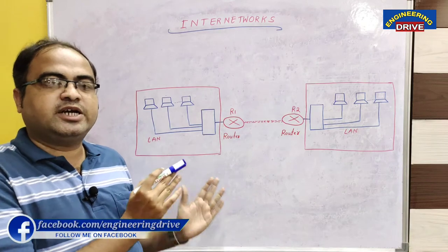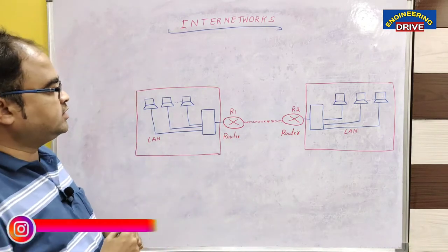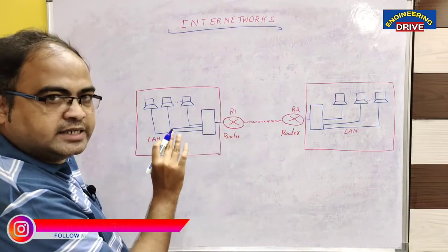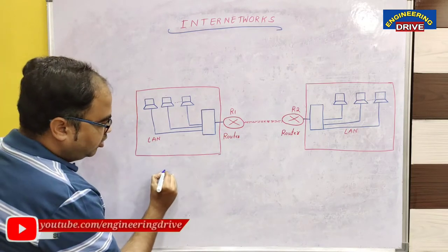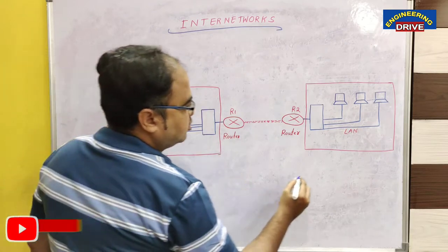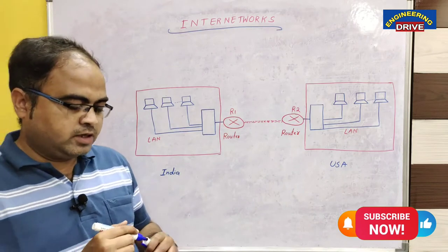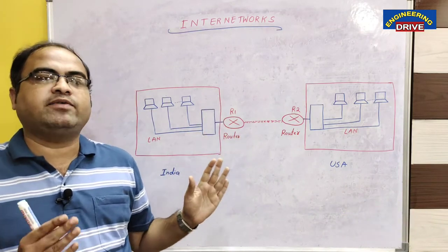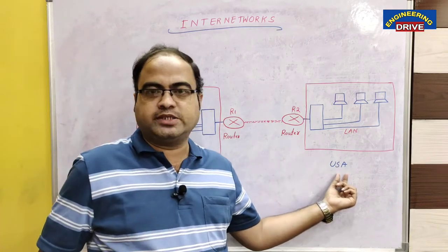You can differentiate what is a network and what is an internetwork. Let us say there is an organization which is having two branches — one branch is in India and another branch is in USA, United States of America. So the same organization has two branches, one in India and another one in USA.